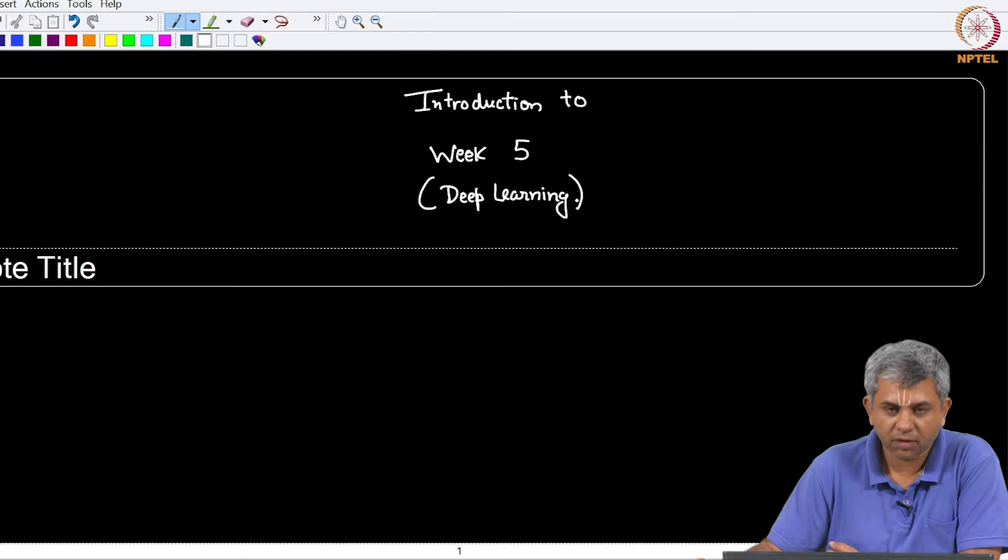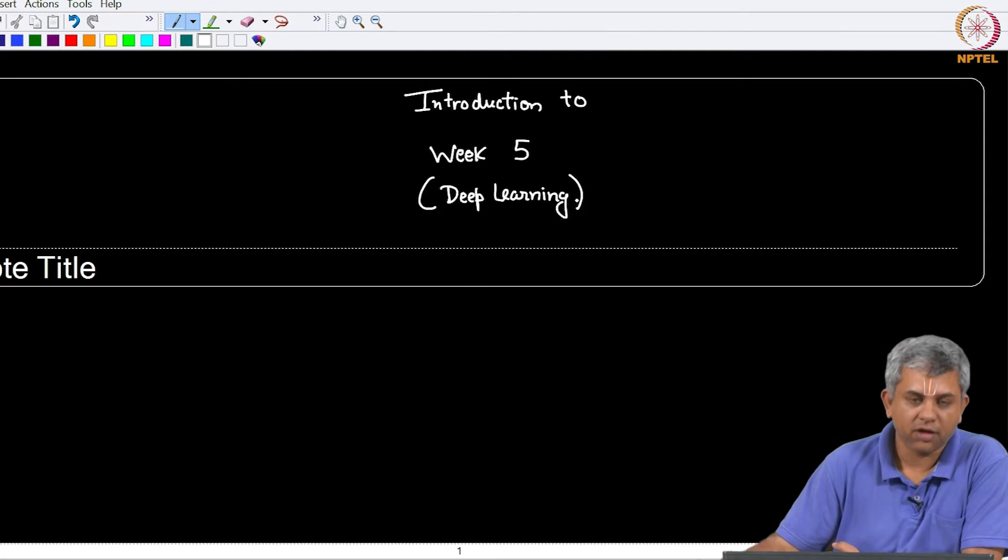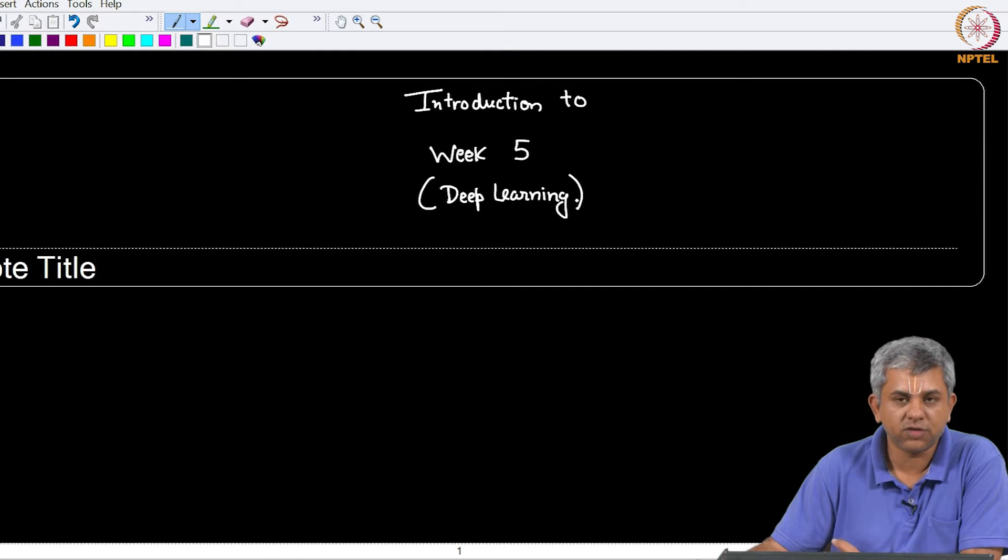Welcome to week 5. This week we will be introducing you to deep learning. Last week we saw linear regression, which was a simple model that connected input to output via a linear model. This week we will be looking at a couple more models, one is logistic regression which is a classification model, and the next is the neural network and subsequently we will go into what are called deep neural networks, which is usually the terminology used for deep learning.